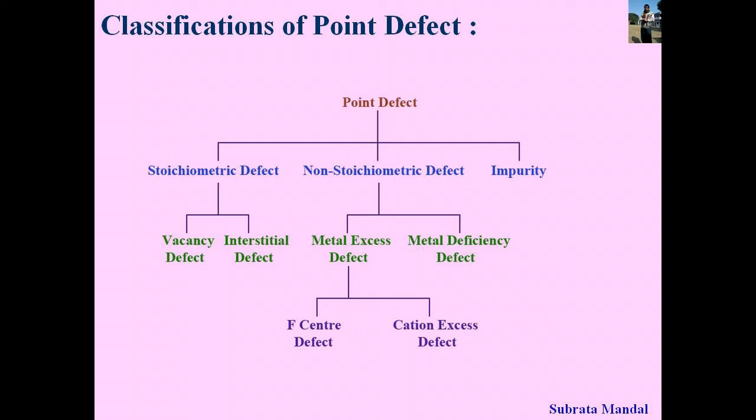Stoichiometric defects are again two types: namely vacancy defects and interstitial defects. Also, non-stoichiometric defects are two types: namely metal excess defects and metal deficiency defects. Metal excess defects are again two types: F-center or color center, and cation exchange defects.